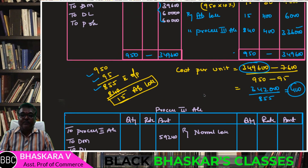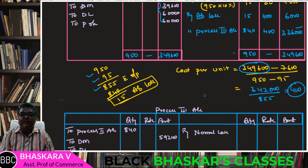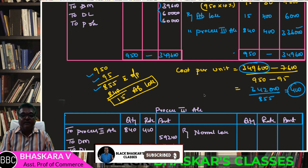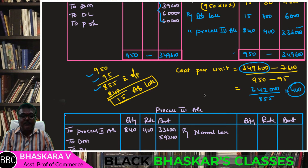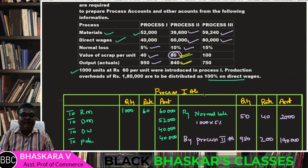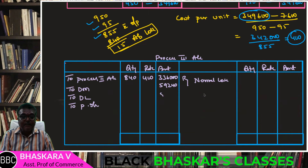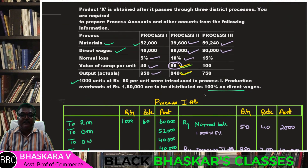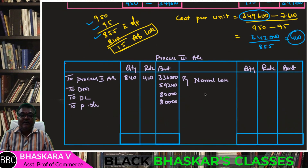Input is 840 units at 400 per unit = 3,36,000. Direct labor is 80,000. Production overhead is 100% of direct wages = 80,000. Normal loss is 15% on 840 units = 126 units, and additional direct material 59,240.